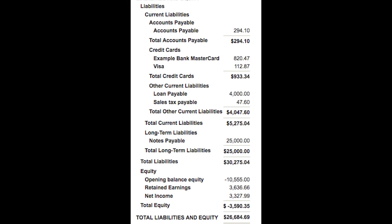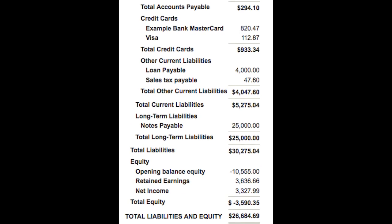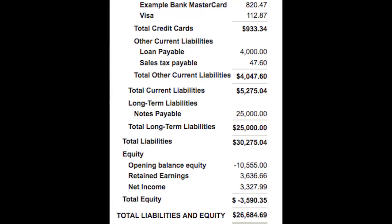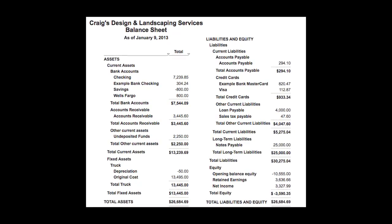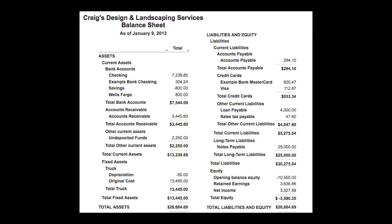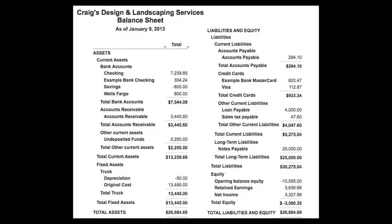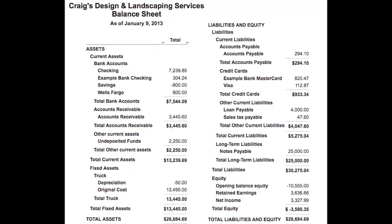Now let's look at Craig's liabilities and owner's equity. Liabilities are split into current liabilities and long-term liabilities. Current liabilities are what your company owes and has to pay off within a year from the balance sheet being created. In Craig's case, he has accounts payable, credit cards, loans, and sales tax to pay. Long-term liabilities are everything else due beyond one year. In Craig's case, his only long-term liability is a note payable. A balance sheet has to balance, so the difference between your assets and your liabilities is your equity. Craig has $30,275 in liabilities and only $26,684 in assets, which gives him a negative equity of $3,590.